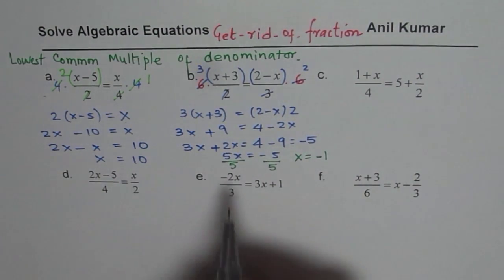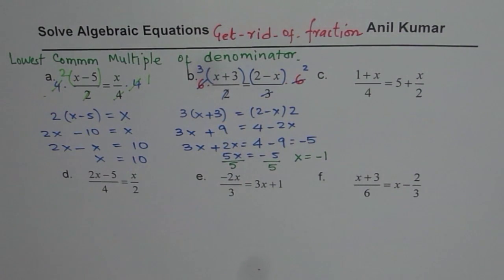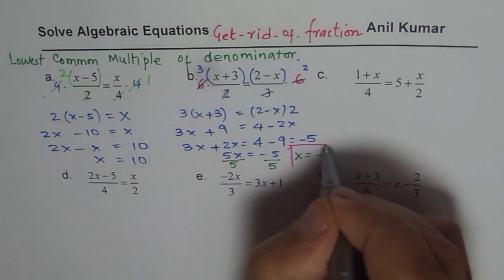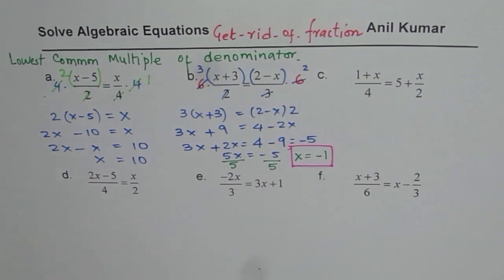Right? So 5 divided by 5 is 1. So we get our solution, which is x equals to minus 1. Right? So that is how you can solve it.